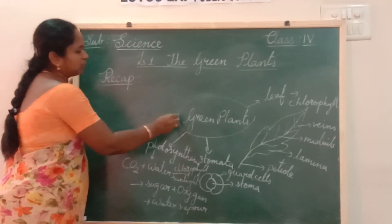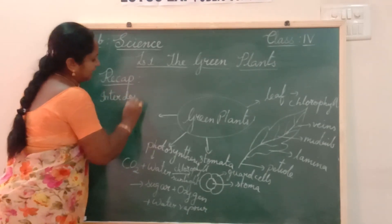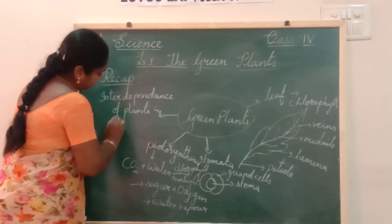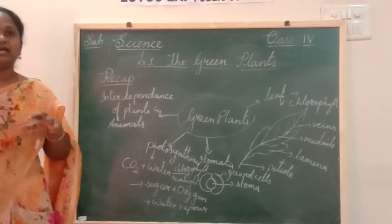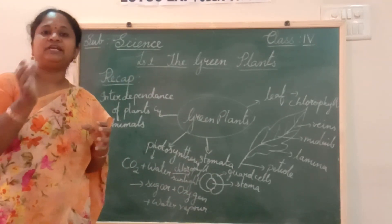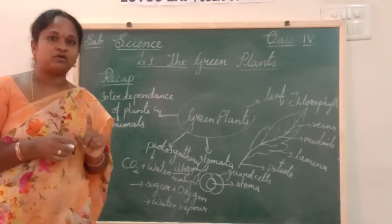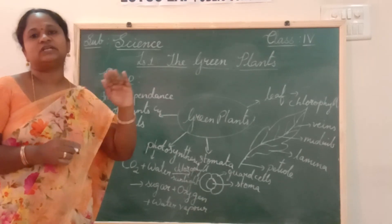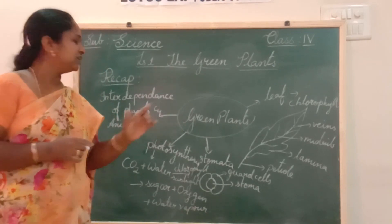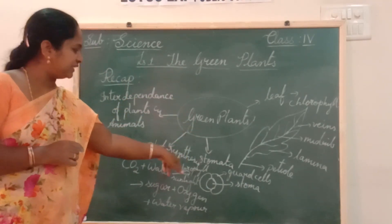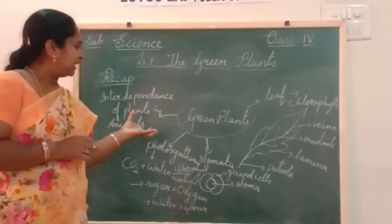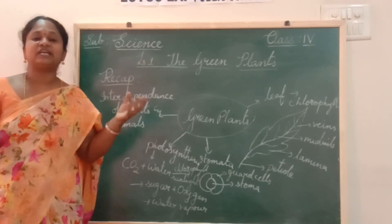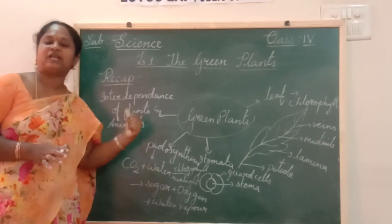We also discussed about the interdependence of plants and animals. Both plants and animals are dependent on each other. Animals depend on plants for food, for oxygen, and also for medicines. And animals release carbon dioxide, which is used by the plants for carrying out photosynthesis. If either the number of plants or the number of animals increases, there will be no balance in nature, and climatic conditions will also differ. So there should be a balance between plants and animals.